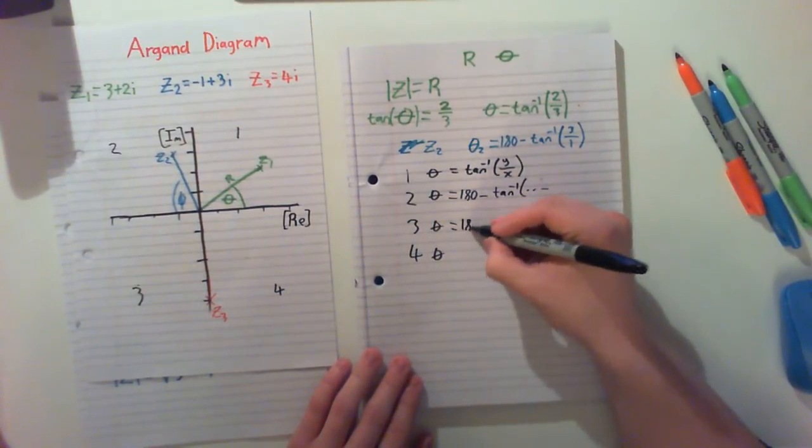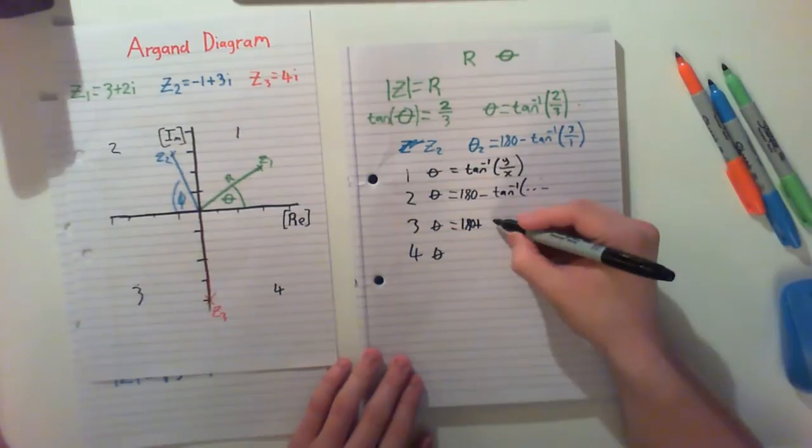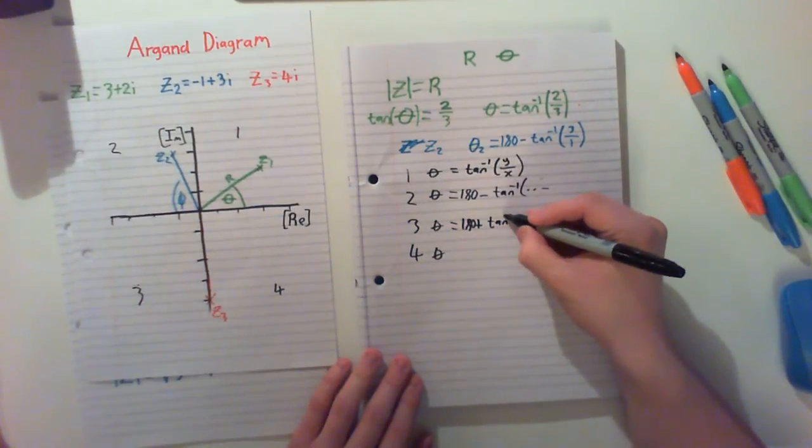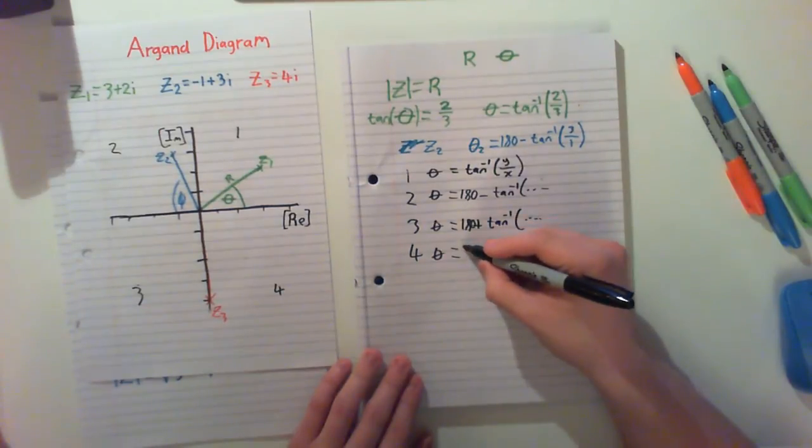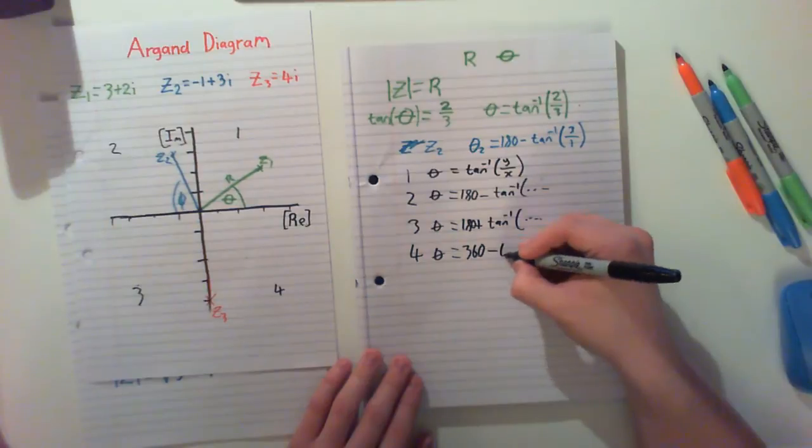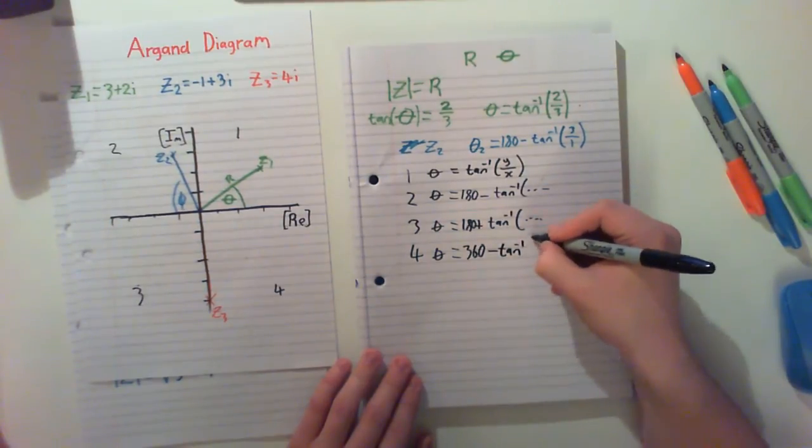For our next, it's 180 plus our tangent to the minus 1 and everything else in the brackets. And finally, we do 360 minus tan to the minus 1 of our y over our x.